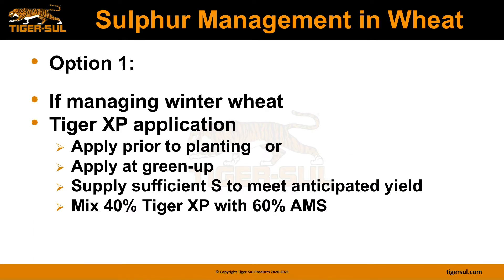One step in that management process is the application and application timing of our Tiger XP product. If you're working with winter wheat, Tiger XP can be applied prior to planting or you can apply it at green-up. Just be sure you supply sufficient sulfur to meet your anticipated yield goal. If applying Tiger XP to a field that has never had elemental sulfur, to build up the native bacteria population, some farmers mix ammonium sulfate with the Tiger XP. We suggest mixing about 40% Tiger XP with 60% ammonium sulfate.